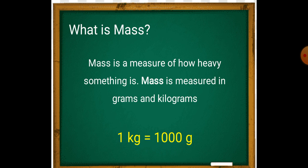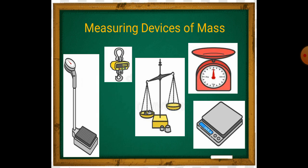Remember, 1 kilogram is equal to 1000 grams. Measuring devices of mass: We use different devices to measure mass, like weight machine, beam balance, spring balance, and electronic balance.